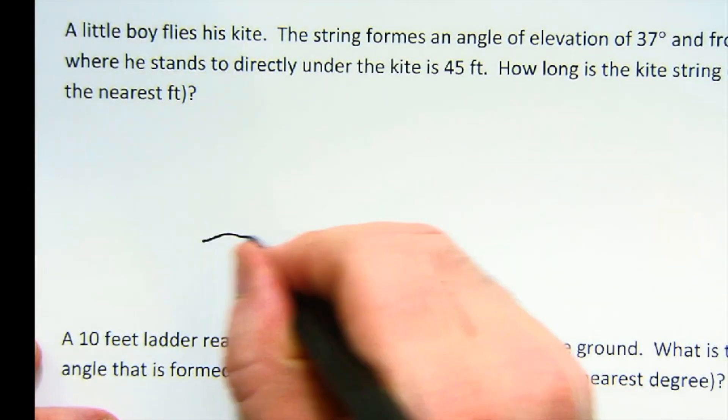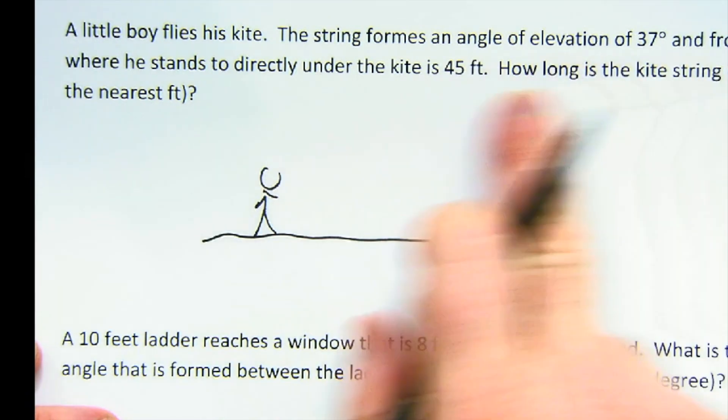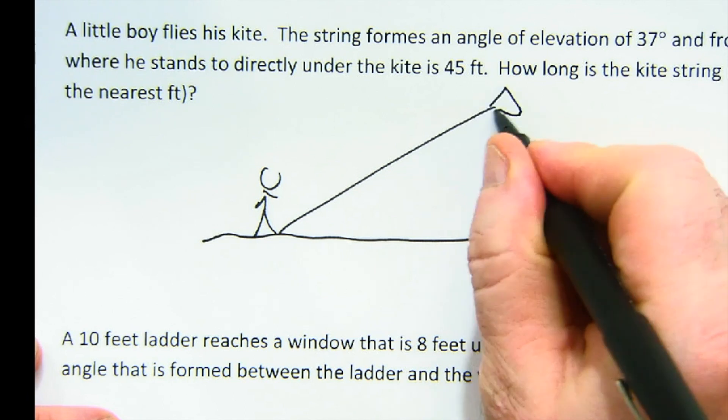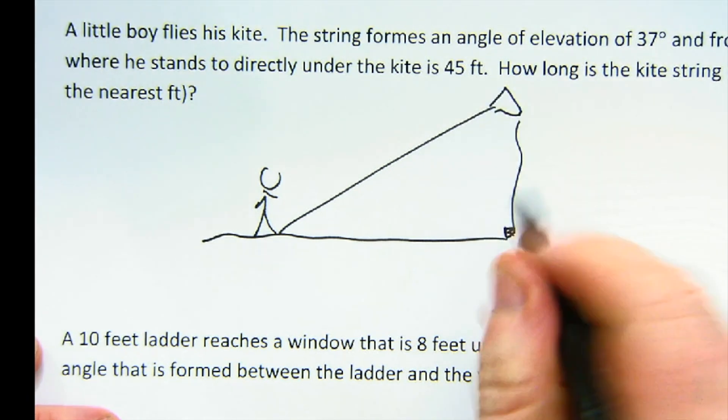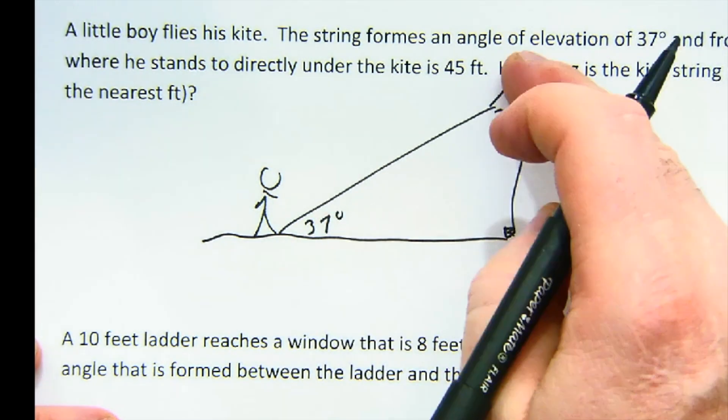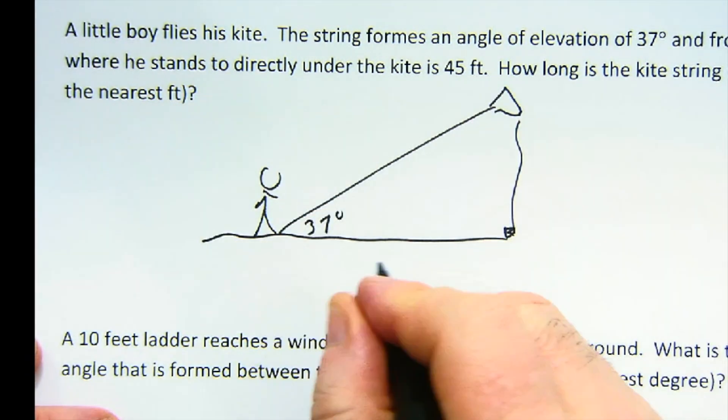Let's finish with the boy and the kite. Here's my friend, the boy. String forms an angle of elevation from where he stands. Now, here's my kite. String forms an angle of elevation, 37, from where he stands, directly under.